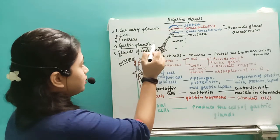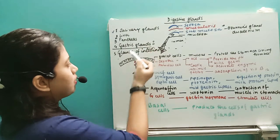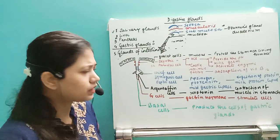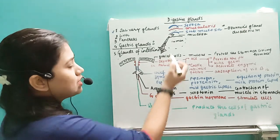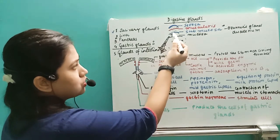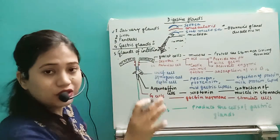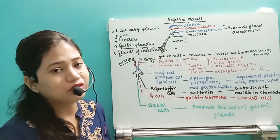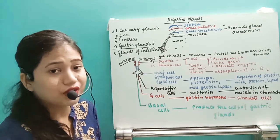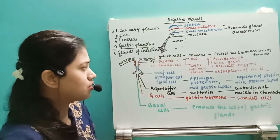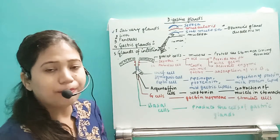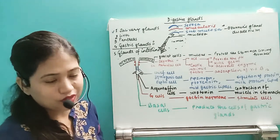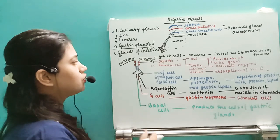Now we will look at the liver, pancreas, and glands of the intestine. First, in the mucosa region you can see small tubular structures — those tubular structures are nothing but the gastric glands. We are taking one small gland to examine what cells are present within it.